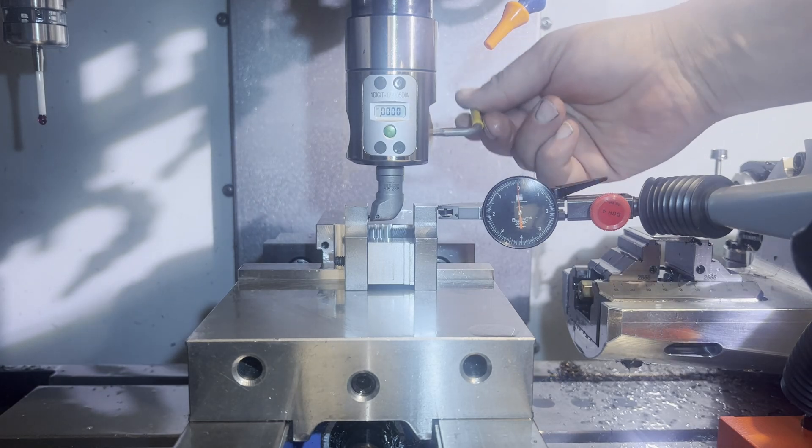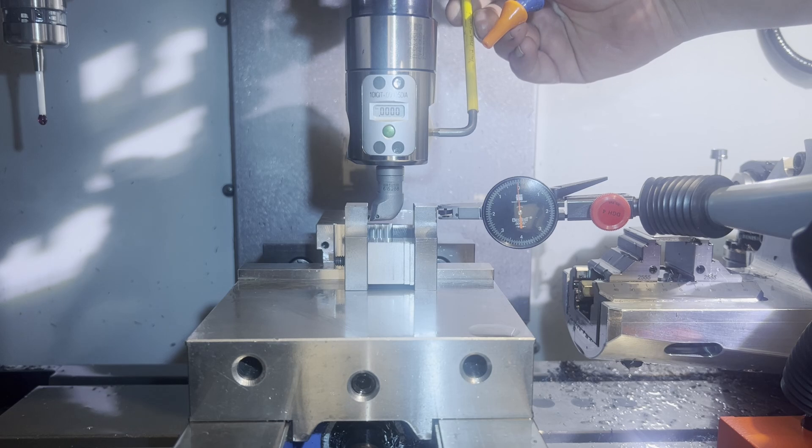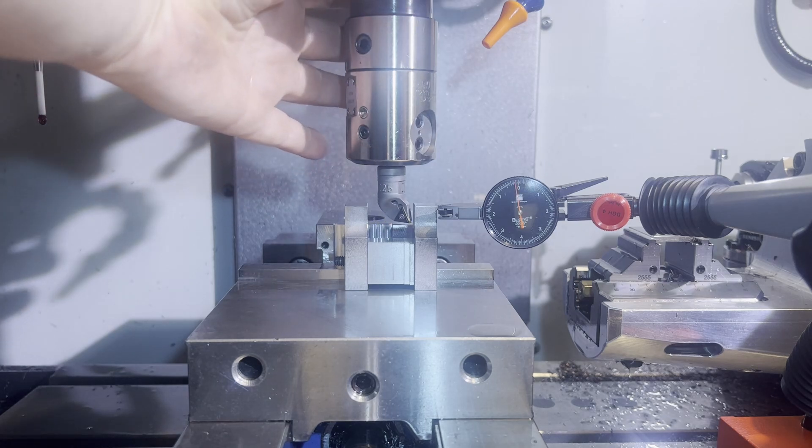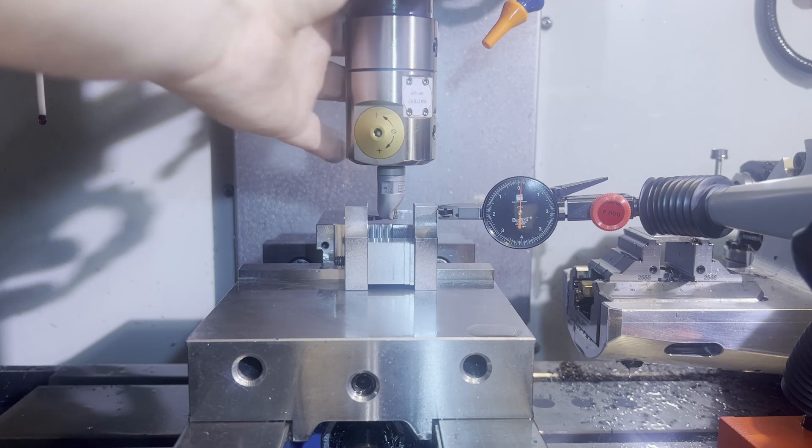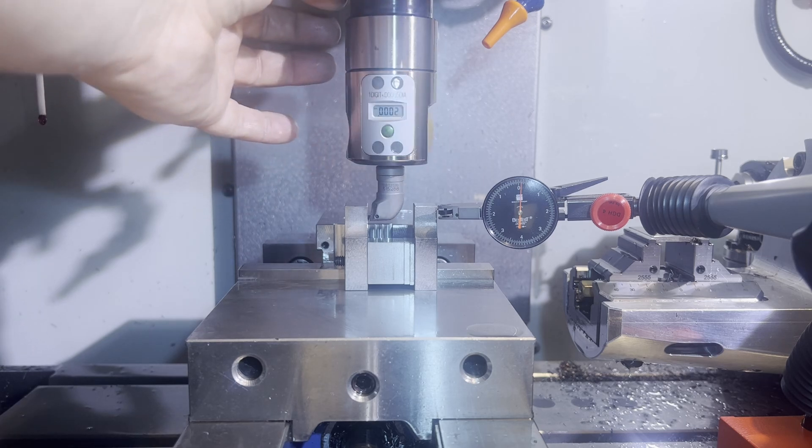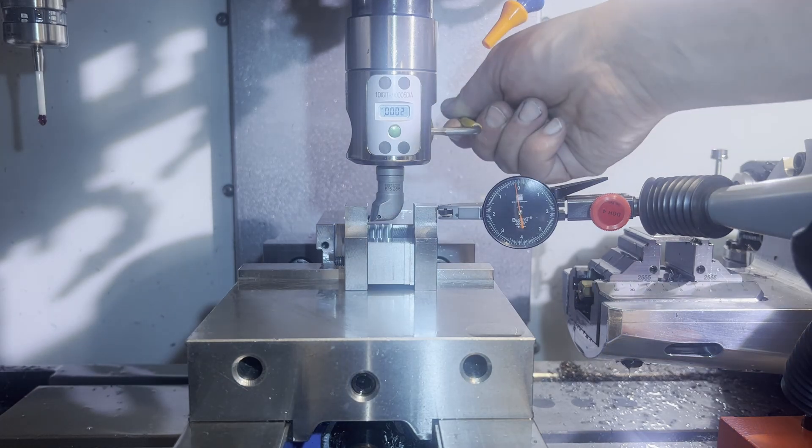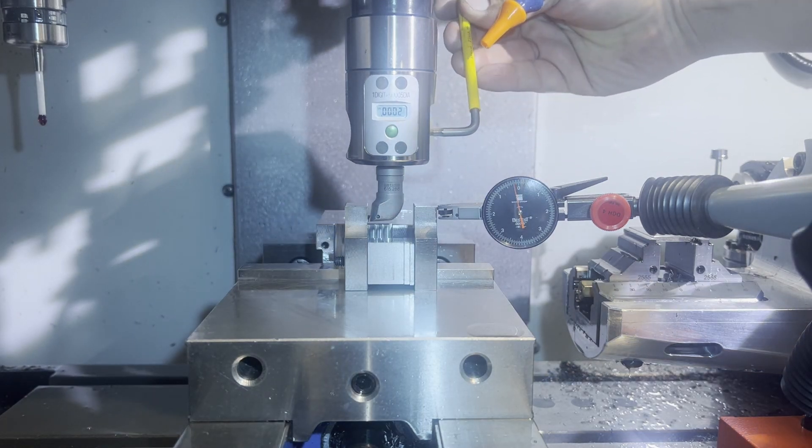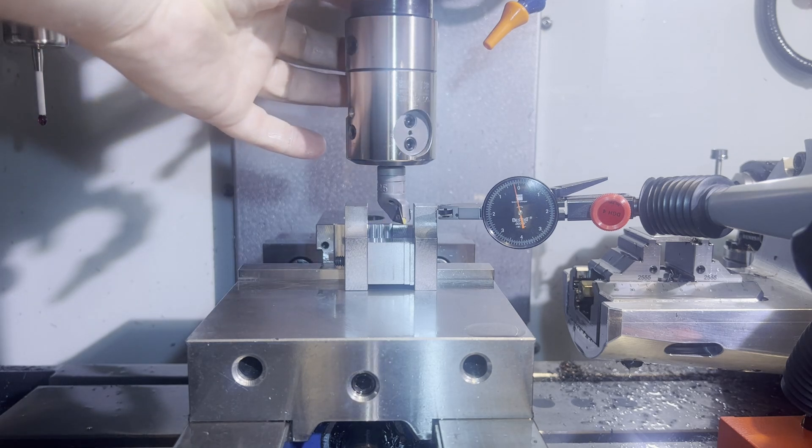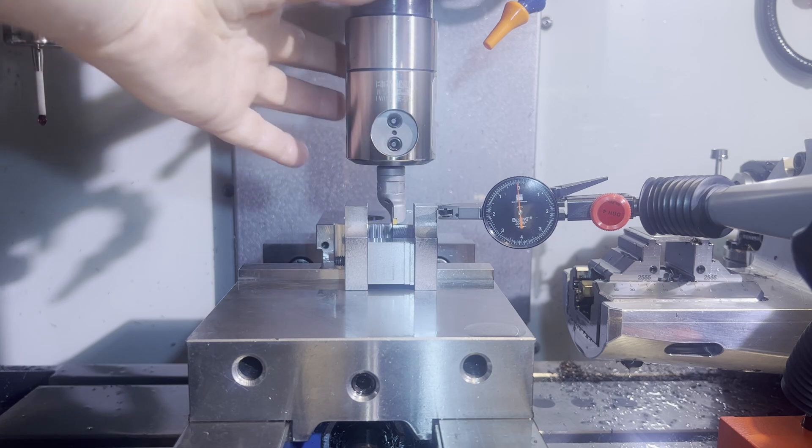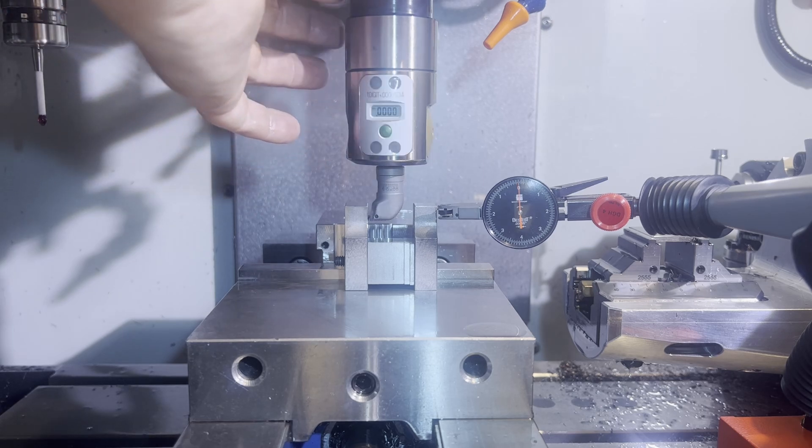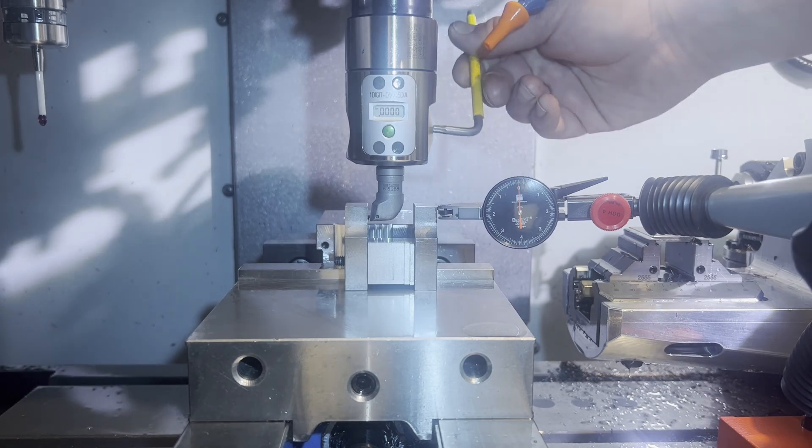Right now we're right on nominal size. If we increase the head diameter two tenths, we should see it move. Now we'll go back to zero and see if our process is repeating. And now we'll go up to a thou oversize and see what that does.